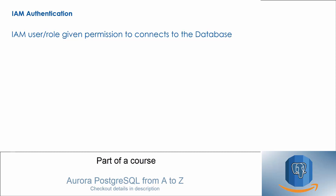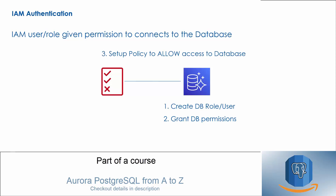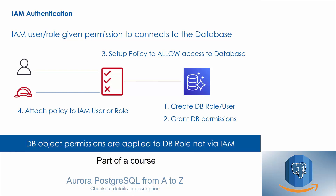With IAM authentication for RDS, an IAM user or role is given the permission to connect to the database. On the RDS or Aurora database, you still need to create a database role or database user and grant it the database permissions. A policy needs to be created that allows access to the database resource, and this policy can then be attached to a user or role. The policy does not have granular permissions for database objects — DB object-level permissions are still managed by way of grant and revoke in the database.